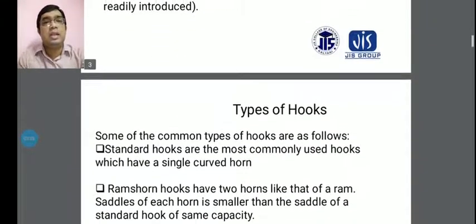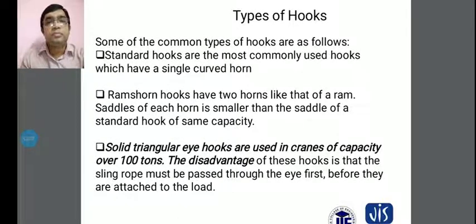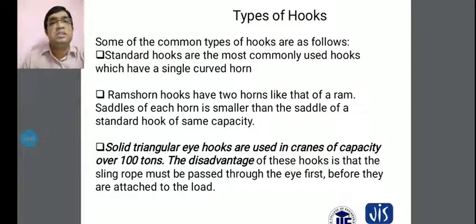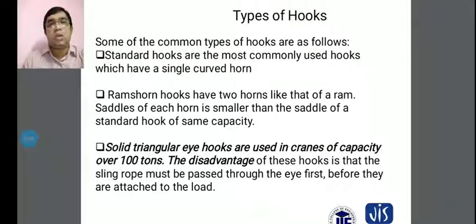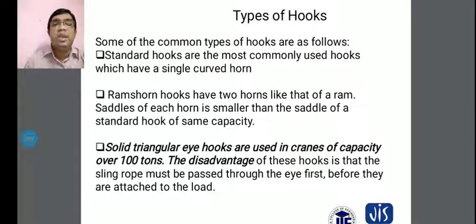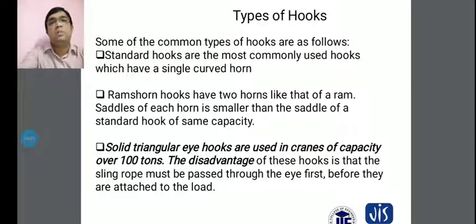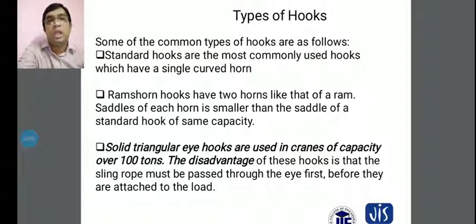The types of hooks: some of the common types are as follows. Standard hooks are the most commonly used, having a single curved horn. Sometimes a single cut is used and sometimes a ram-horn type is used. Different types of hooks are used for different purposes of material handling and hoisting.